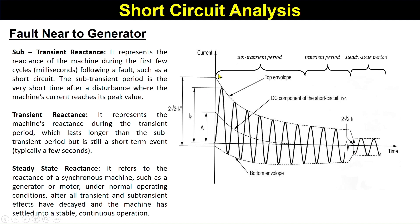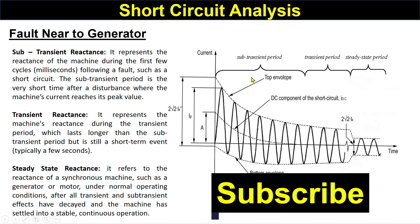The sub-transient period is the very short time of the disturbance where the machine current reaches its peak value. The transit reactance represents the machine's reactance during the transit period, which lasts longer than the sub-transient period — typically a few seconds — while the sub-transient period is of milliseconds duration.